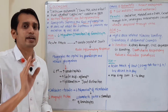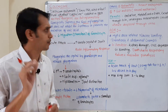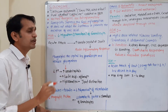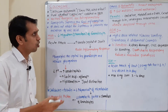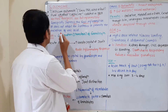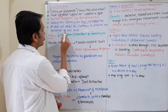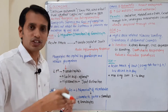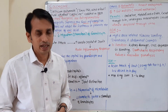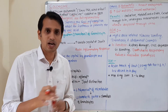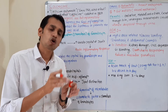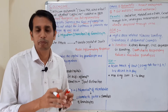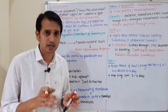Colchicine is an anti-inflammatory drug that specifically acts on gout inflammation. However, it does not inhibit the synthesis or promote the excretion of uric acid — it does not reduce uric acid production directly.